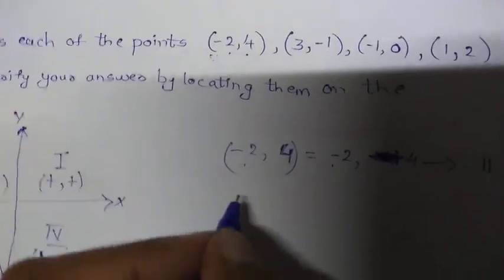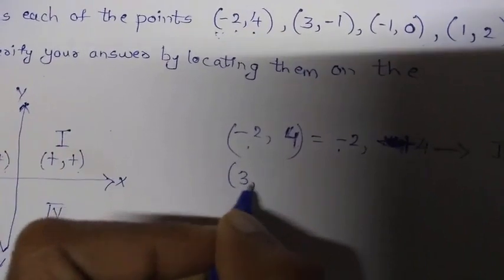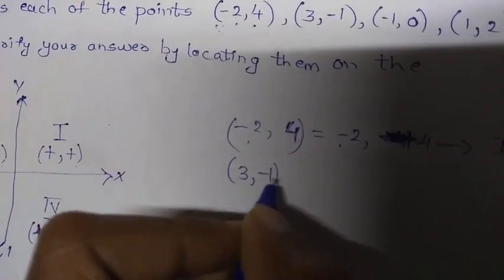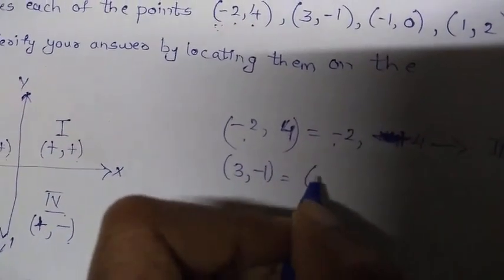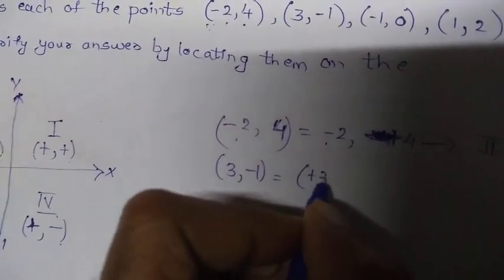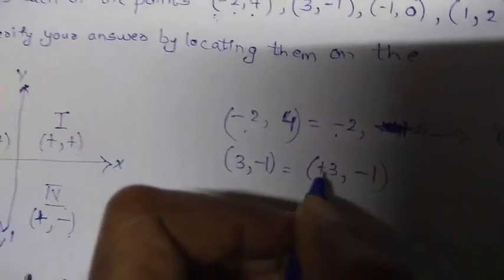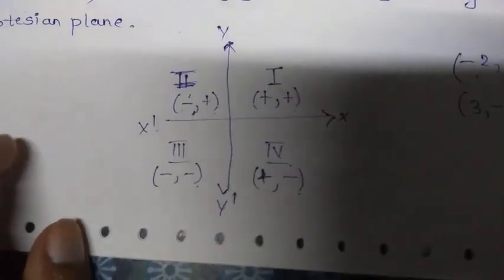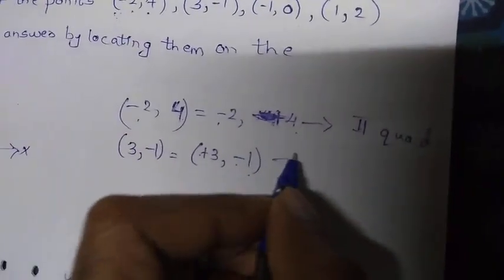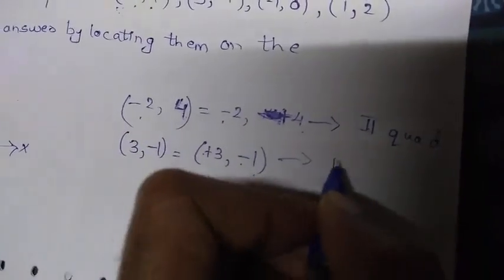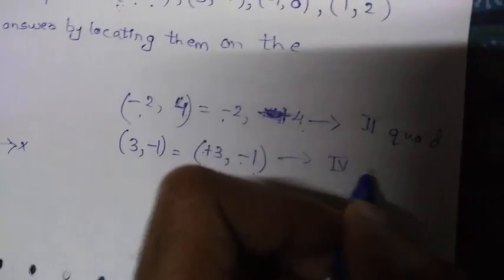Similarly for (3, −1) — written as plus 3, minus 1 — the signs are plus and minus. In which quadrant do plus and minus appear? The 4th quadrant. So (3, −1) must lie in the 4th quadrant.